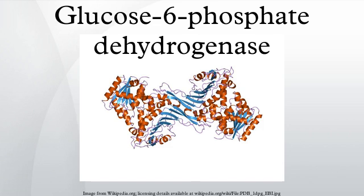Glucose-6-phosphate dehydrogenase is a cytosolic enzyme that catalyzes the chemical reaction: D-glucose-6-phosphate plus NADP+ yields 6-phospho-D-glucono-1,5-lactone plus NADPH plus H+. This enzyme is in the pentose phosphate pathway, a metabolic pathway that supplies reducing energy to cells by maintaining the level of the coenzyme nicotinamide adenine dinucleotide phosphate. The NADPH in turn maintains the level of glutathione in these cells, which helps protect red blood cells against oxidative damage.